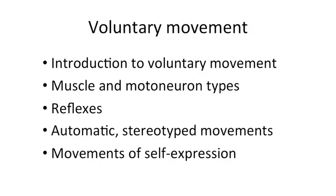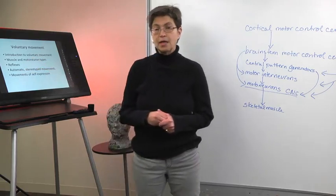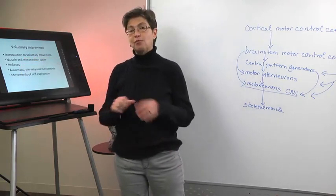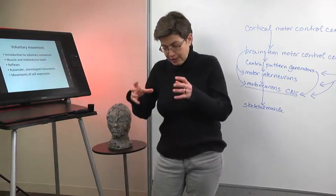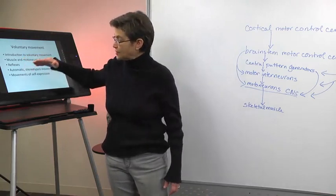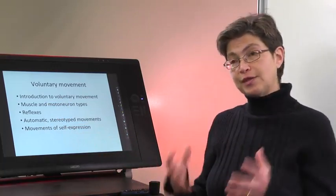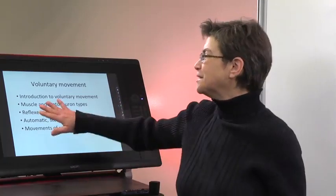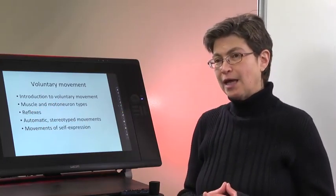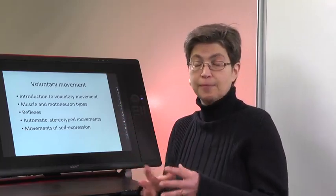What we're going to do is start with an introduction to voluntary movement and move from the bottom up. We'll look at different types of muscles and different motor neuron types. Then we'll look at reflexes, automatic stereotype movements, and movements of self-expression — these are the three major types of movements. Each is governed by a different set of neurons in the central nervous system, so you can have a deficit in one type of movement without any problem doing the others. Movement is not simply movement; there are many different types, and they are individually controlled and anatomically separated.